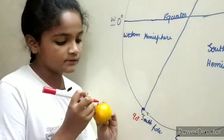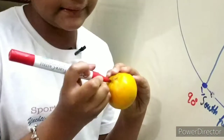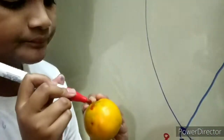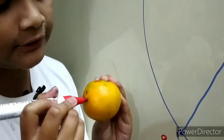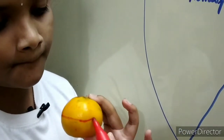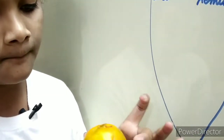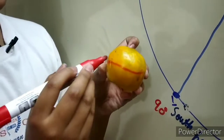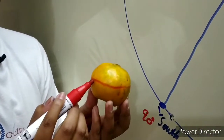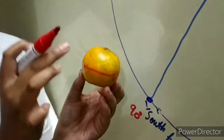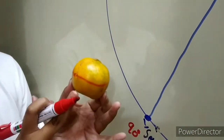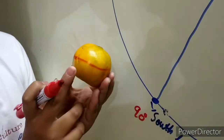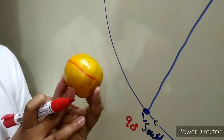This is North Pole at 90 degrees. This is South Pole at 90 degrees. And this is the equator between them at 0 degrees. This equator divides our Earth into two parts — North and South. From equator to North Pole is the Northern Hemisphere. From equator to South Pole is the Southern Hemisphere.